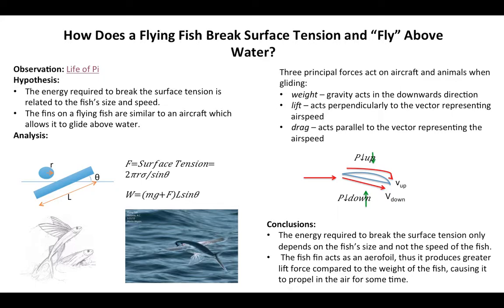For the first part of the hypothesis, we model the flying fish as a long cylinder with length l and radius r. To break the surface we need to fight against two forces. The first is the surface tension force, which is 2π times r times sigma divided by sine theta, where theta is the angle made with the horizon. The second force is the weight, so the energy required for the flying fish to break the surface is mg plus F times l sine theta.